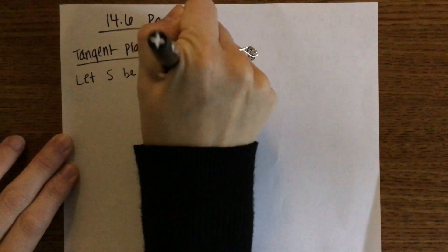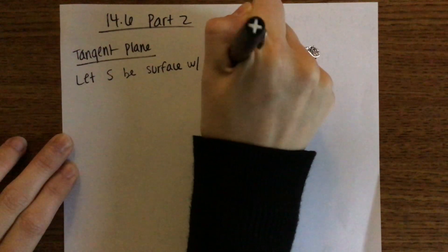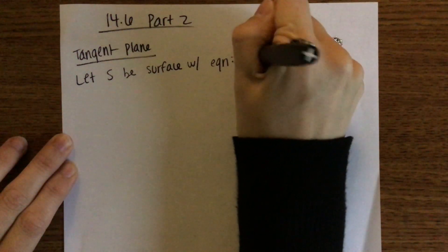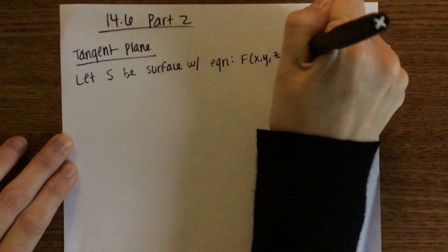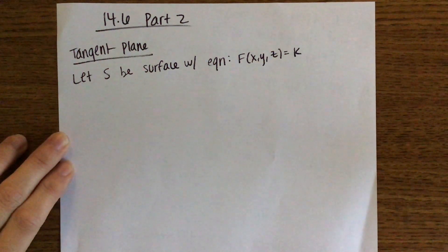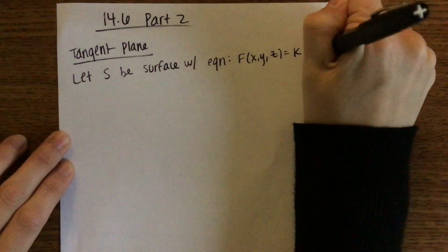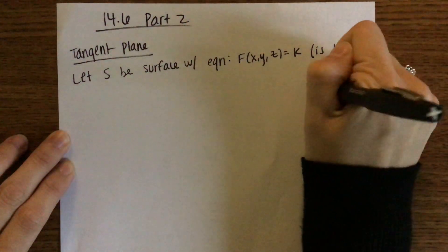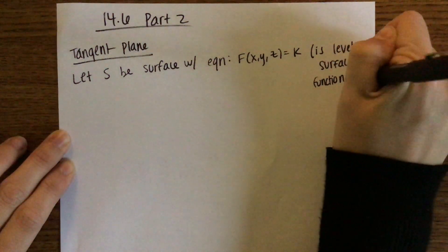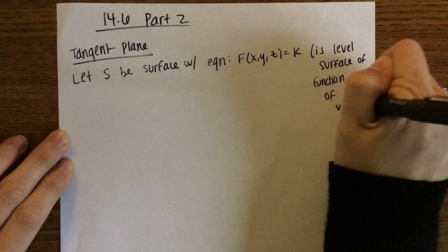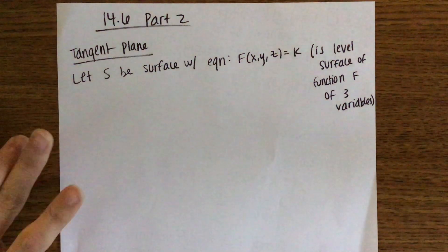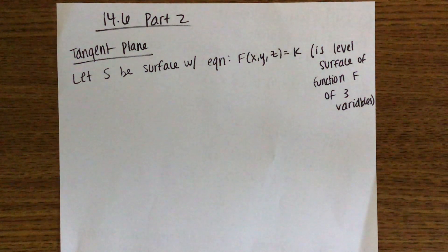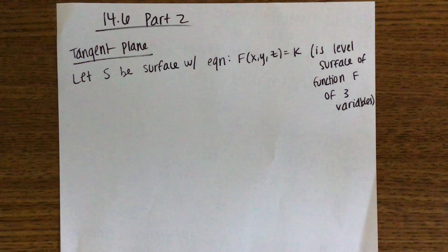We're going to start with some surface S that has an equation such as f of x, y, z equals some value k. This means that S is a level surface of a function f of three variables. Remember, you had a function of three variables, and to find the level surfaces you would set that function equal to different values of k and graph them.